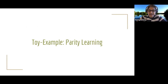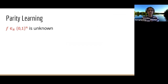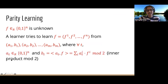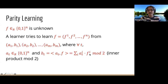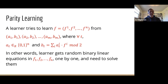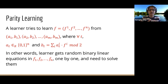Let's look at the parity learning problem. An unknown function f is chosen uniformly at random from the set of n-bit strings. A learner tries to learn f from a stream of samples of the form (a, b), where a is a randomly chosen n-bit string and b is the inner product of a with f — that is, the sum of a_i times f_i mod 2. In other words, the learner gets random binary linear equations in f_1 to f_n, and these equations arrive one by one.